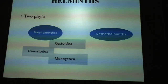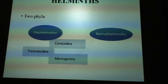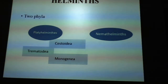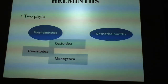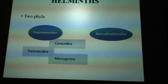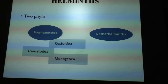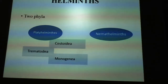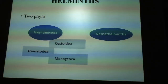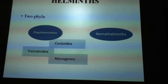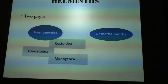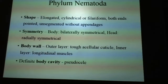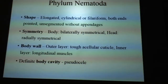As you all know, helminths are divided into mainly two phyla: platyhelminthes and nematohelminthes. Platyhelminthes consists of Cestoda, Trematoda, and Monogenea. The next phylum is nematohelminthes, and we have to see in detail about phylum Nematoda.